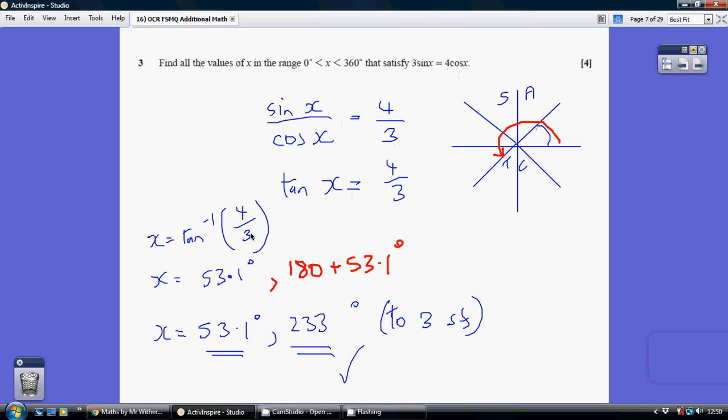Popping that into our calculator we get our first value of 53.1 degrees. Now we need all the solutions between 0 and 360, so using our all silver toy cars, when is tan positive?